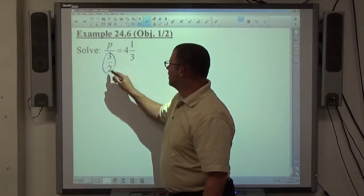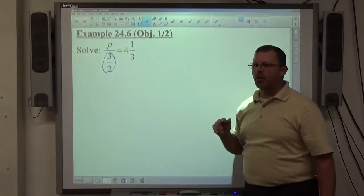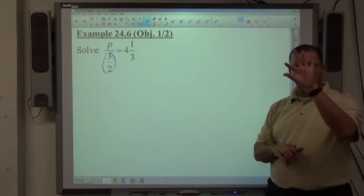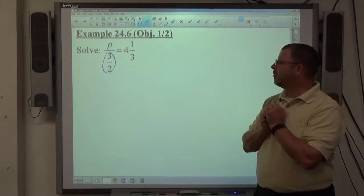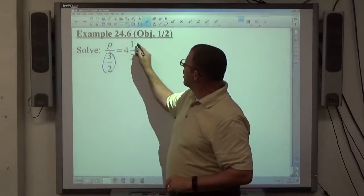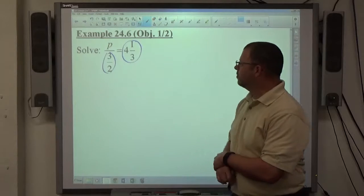this is p divided by 3 halves. The way it's written is not the greatest, but hopefully it'll be very obvious. p is all by itself on top, 3 halves is the denominator of this fraction. And we also have an equal to and into a mixed number there.